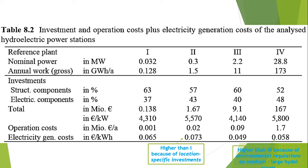In line with the methodology used so far, an interest rate of 4.5 percent has been assumed for this analysis. Starting from these framework conditions, the resulting electricity generation cost can be calculated for hydroelectric power stations being built today.